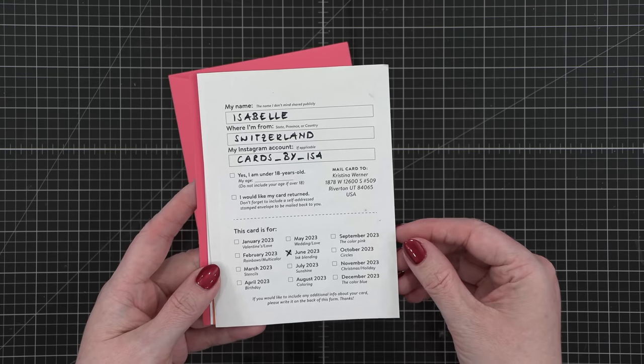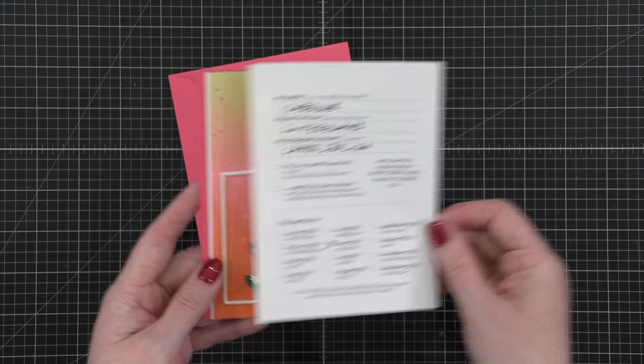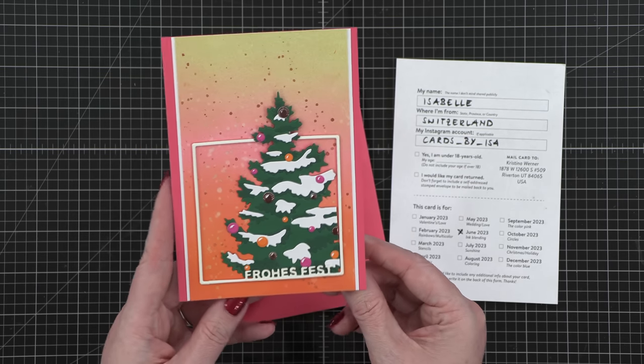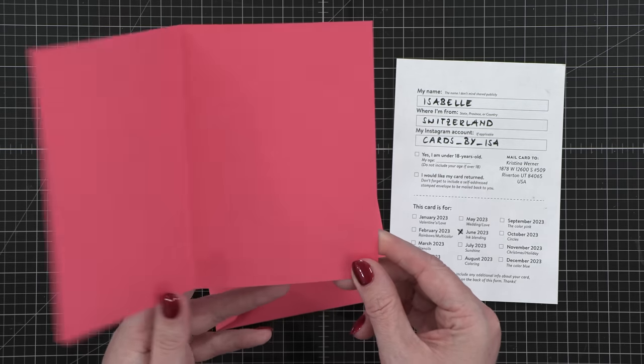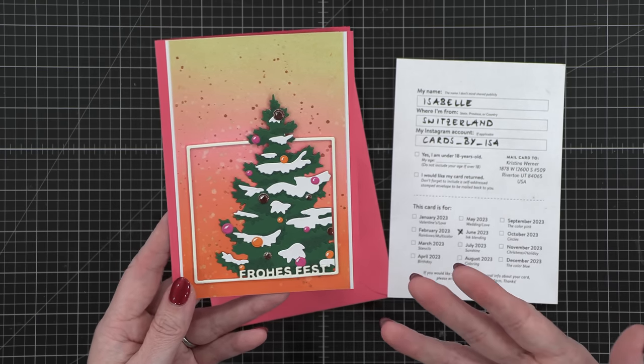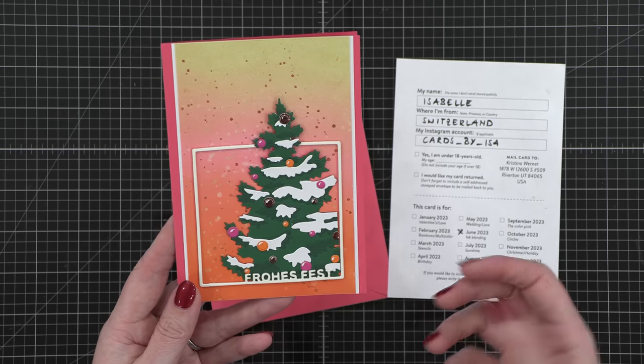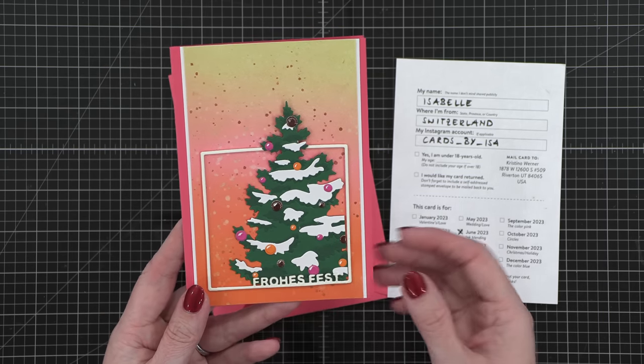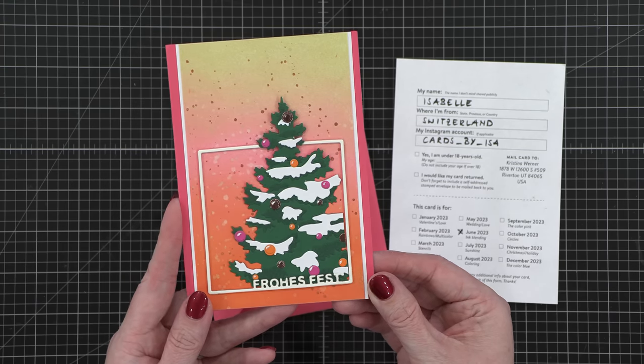This next card is for June and it's from Isabel in Switzerland. She created this beautiful ink blended card. So I love these colors. Not your traditional winter or holiday colors, but I love that she's ink blended them and kind of used like a raspberry shade with an orange. Just beautiful and very unexpected.